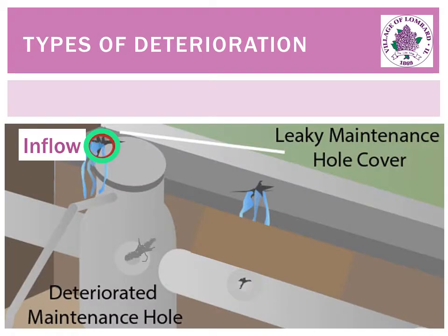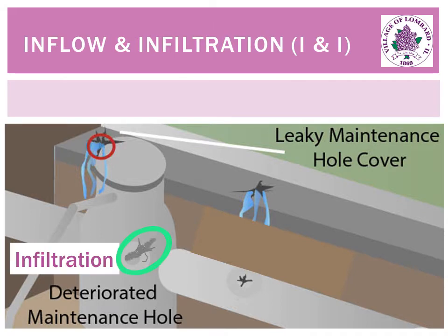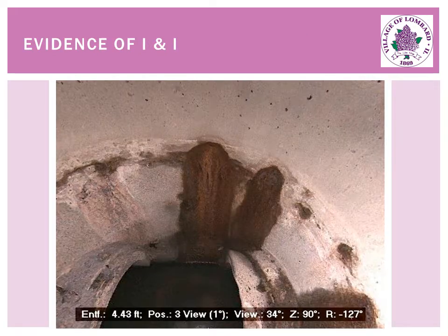The other common problem is inflow and infiltration, often shortened to INI. Inflow is when rainwater enters the sanitary sewer system through unintended entry points, such as a leaky manhole cover. Infiltration is when groundwater enters a sewer manhole through small holes and cracks within the structure. In this manhole, you can see brown streaks that show where water has infiltrated.